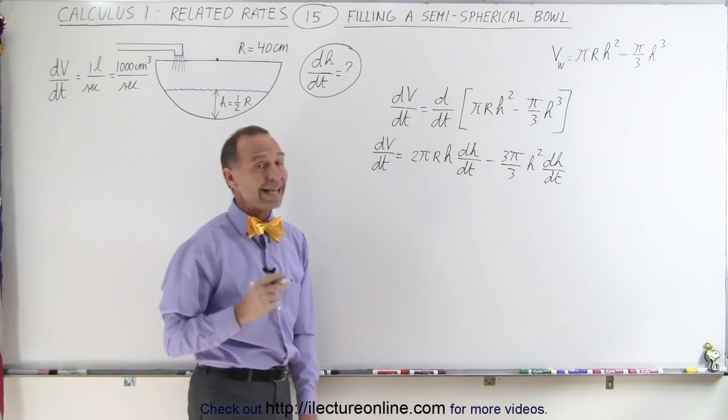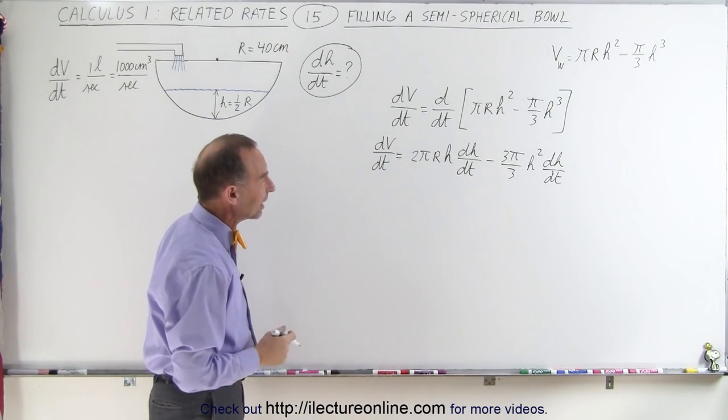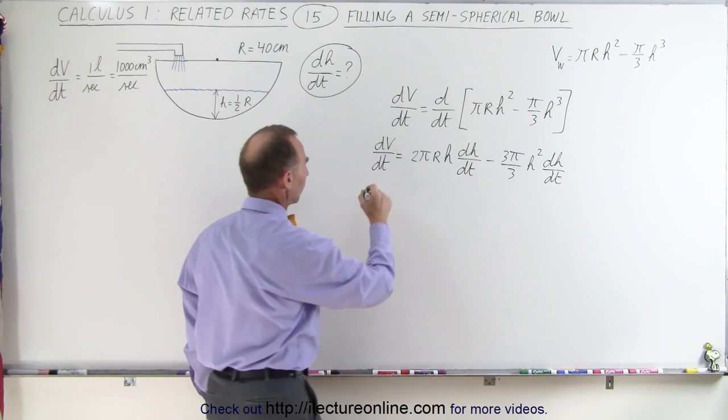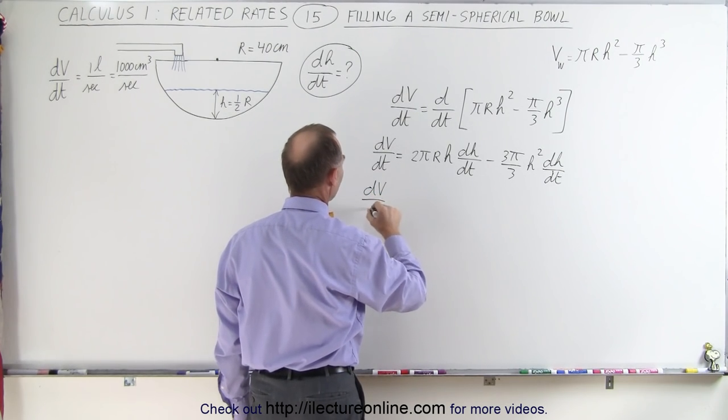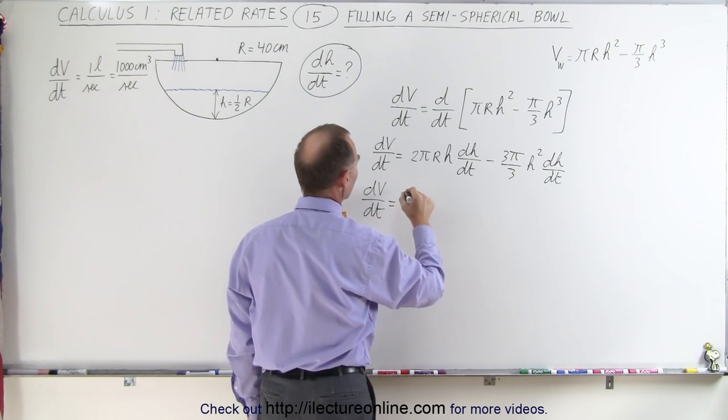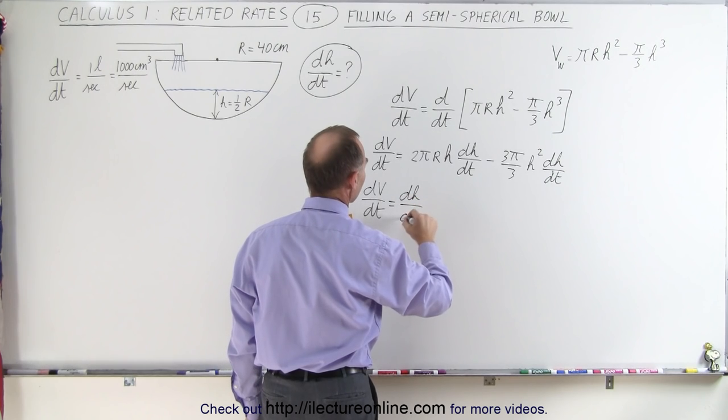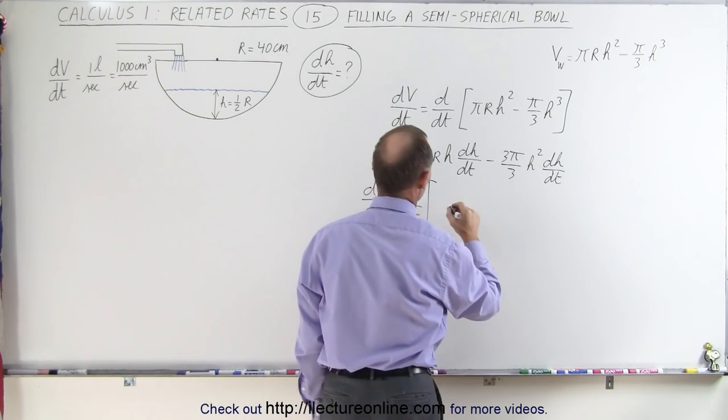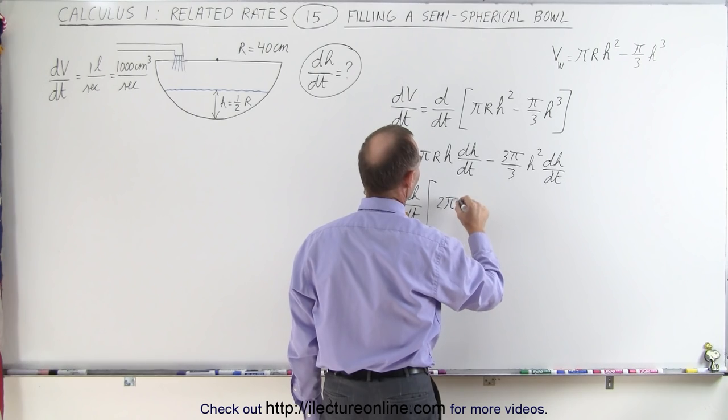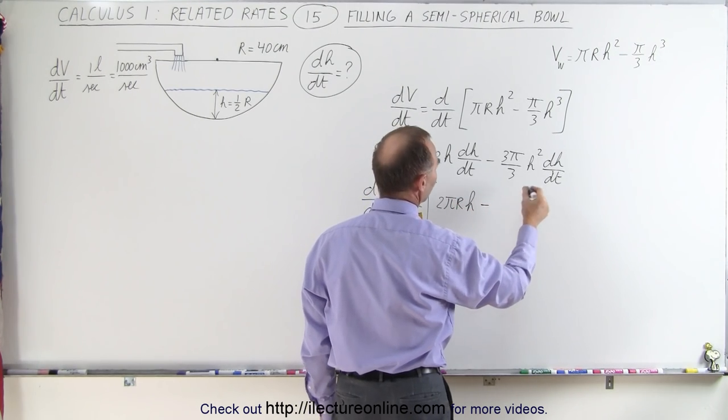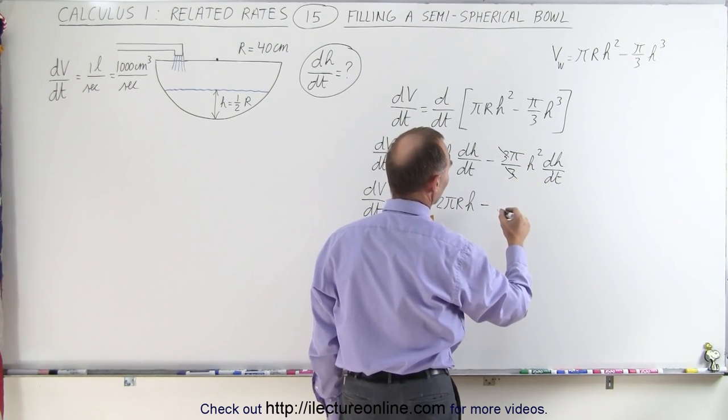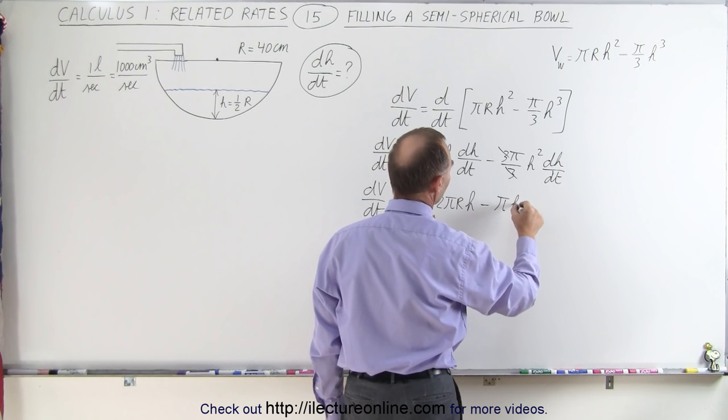And of course what we're looking for here is dh dt, so we have to isolate dh dt, we can factor that out. We have dv dt is equal to dh dt times the first term, we get 2 pi r h minus the second term, notice the 3's cancel, we end up with pi h squared.